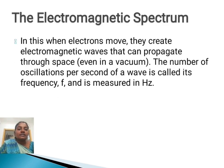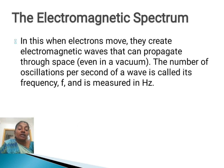The first one is the electromagnetic spectrum. When electrons move, they create electromagnetic waves that can propagate through space, even in a vacuum. The number of oscillations per second of a wave is called its frequency f, and is measured in hertz.